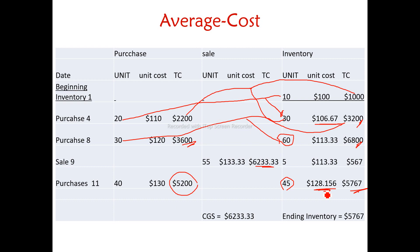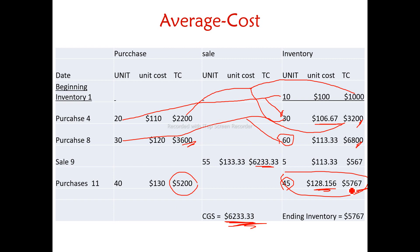The average costing method applies the same unit cost to all units. This is the perpetual inventory of FIFO's average cost. This is the cost of goods sold by sale — the perpetual inventory system under FIFO's average cost.